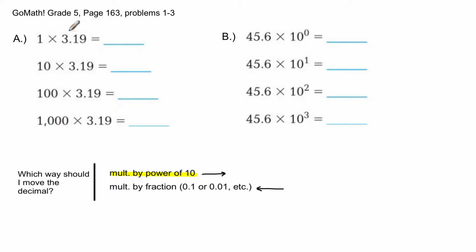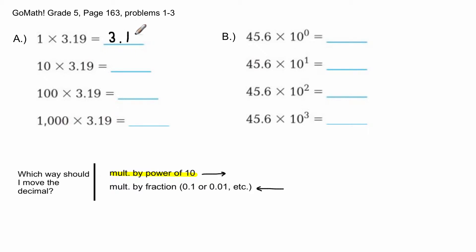Here's the first problem: 3.19 times 1, 10, 100, and 1000 — this is what I mean by powers of ten. When I see powers of ten, I'm moving the decimal to the right. First, 1 times 3.19 — anything times one is itself, so the answer is 3.19.